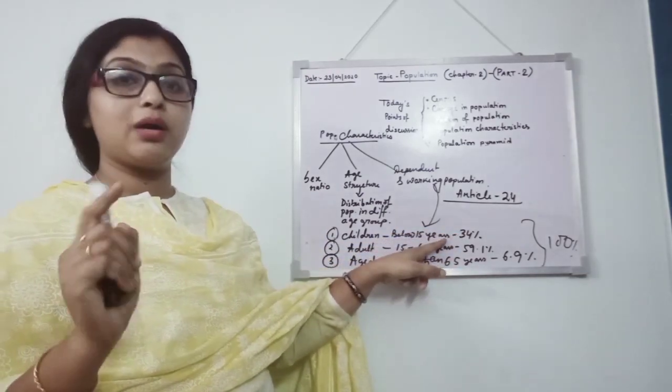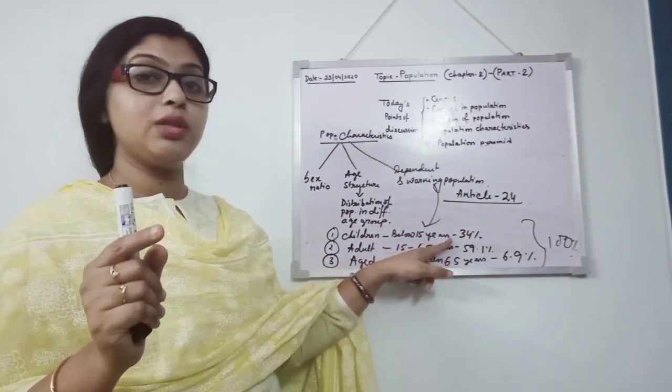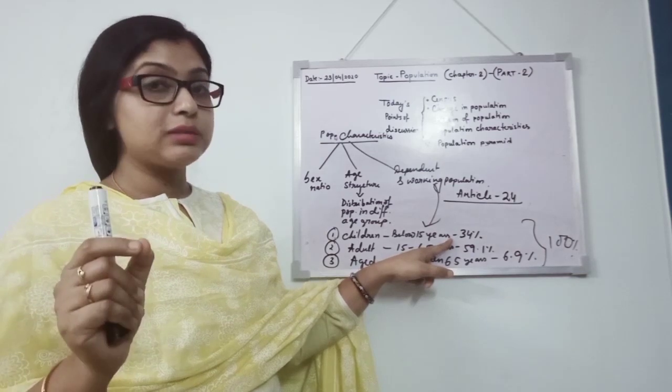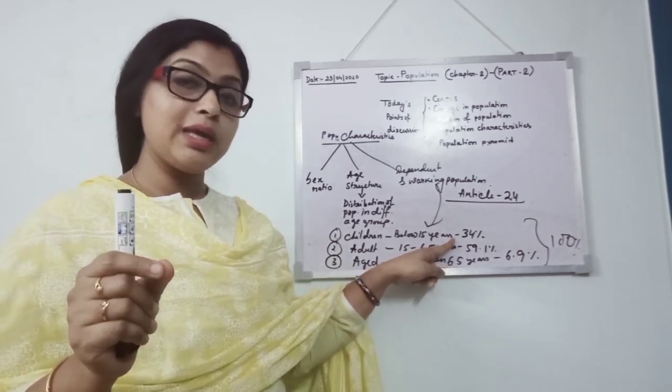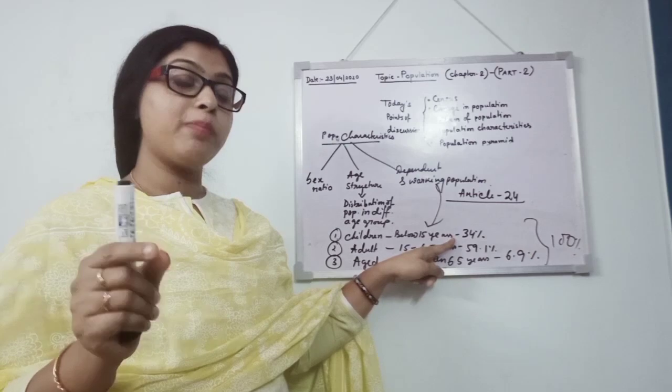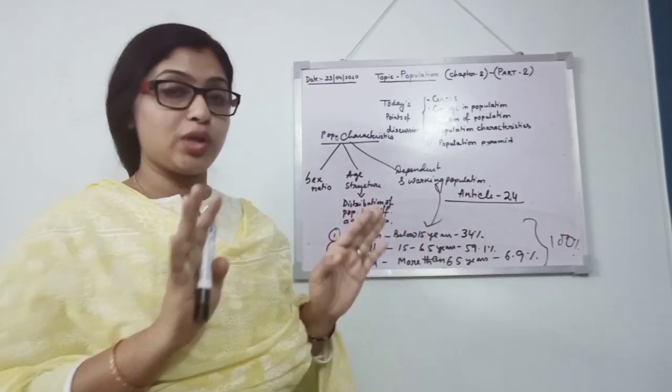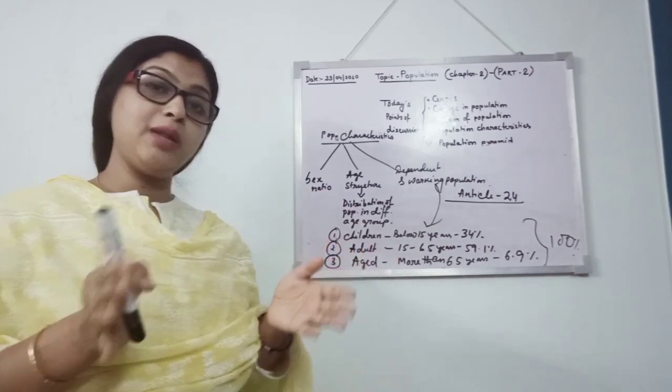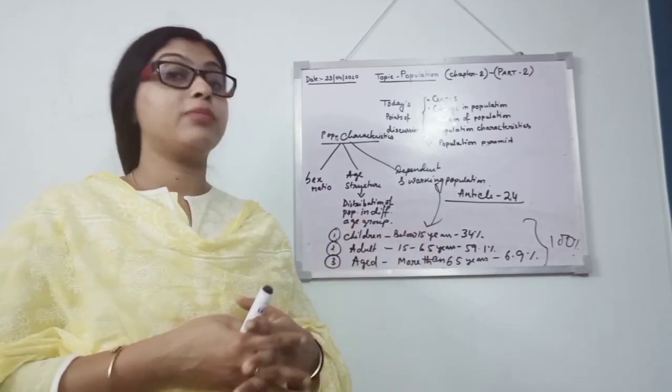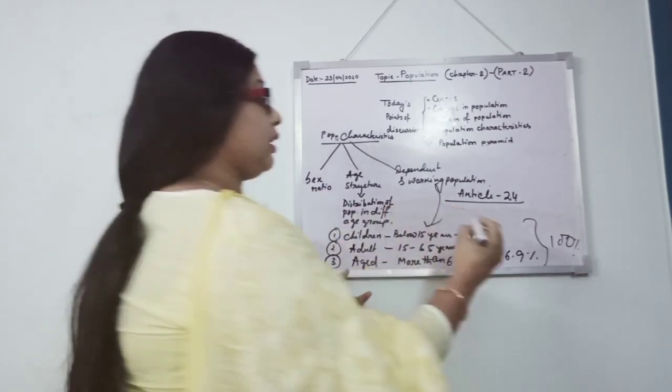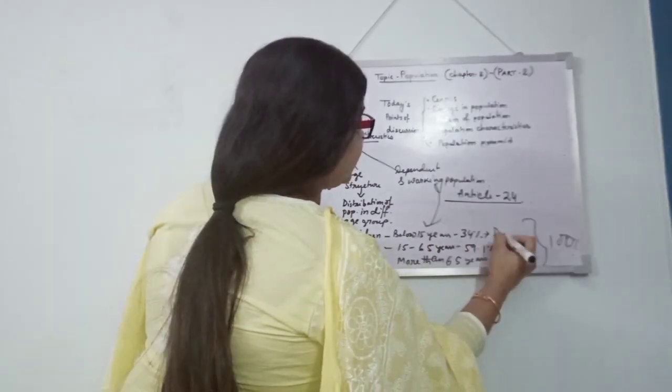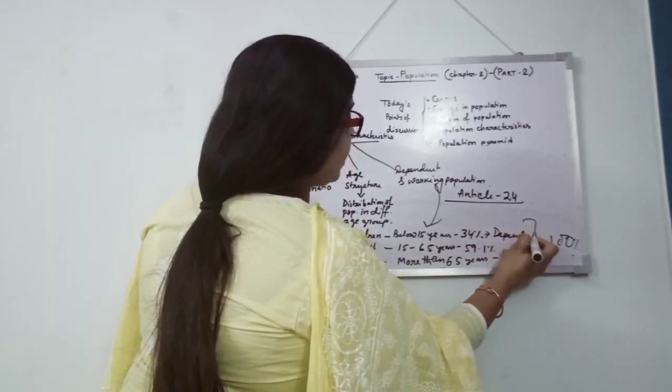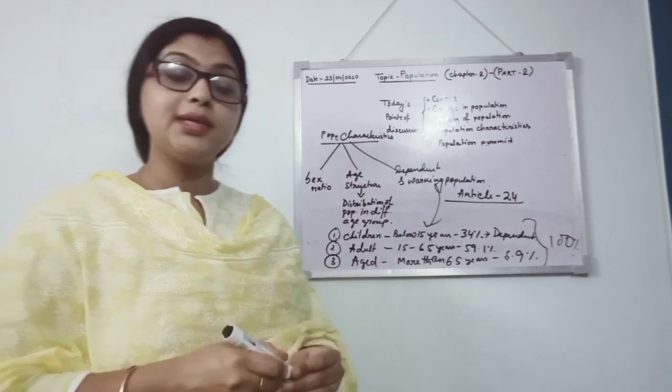They are not producing anything, even they are not participating in any of the manufacturing or production area. They are not involving themselves in the development of the country. They are known as dependent population. They are dependent on others.